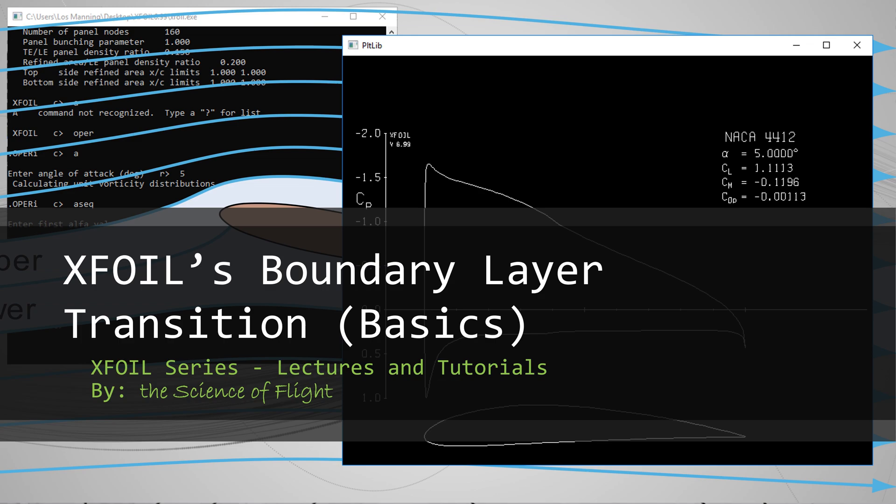We'll start out with a quick explanation of the difference between laminar and turbulent flow and why we care where the flow transitions. Then we'll talk about the two methods that XFOIL uses to determine where transition occurs. Let's get to it.